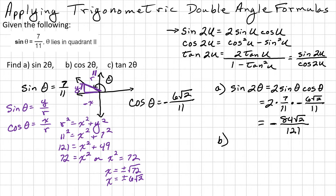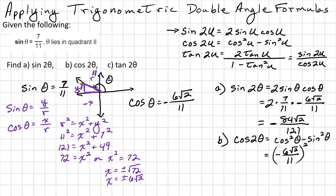Now we find cosine 2 theta, which equals cosine squared theta minus sine squared theta. That is negative 6 square root of 2 over 11, squared, minus 7 over 11 squared, which yields 72 over 121 minus 49 over 121. Subtracting gives 23 over 121.